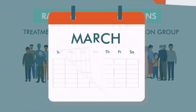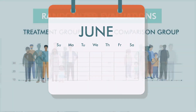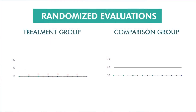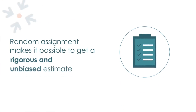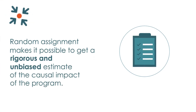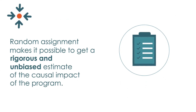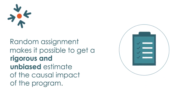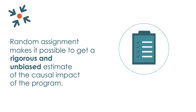After a period of time, researchers compare the average outcomes between the treatment and comparison groups. Random assignment makes it possible to get a rigorous and unbiased estimate of the causal impact of the program — in other words, what specific changes to participants' lives can be attributed to the program?